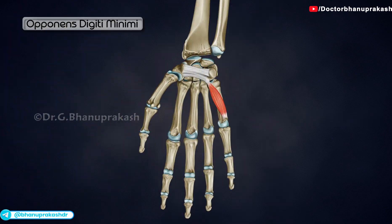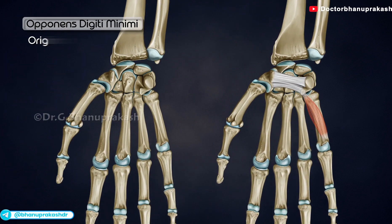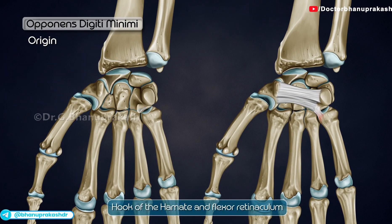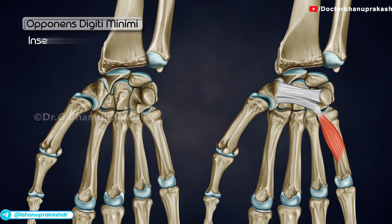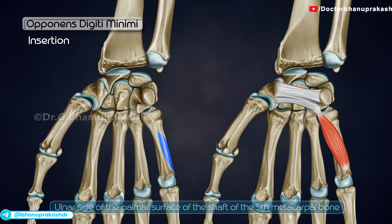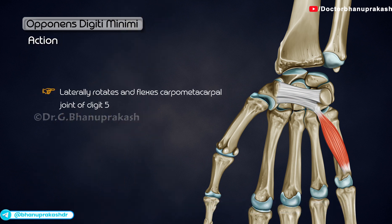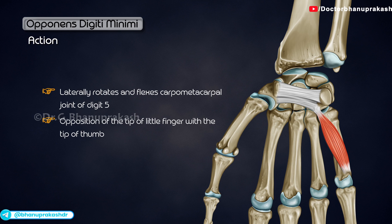Opponens digiti minimi originates at the hook of the hamate and flexor retinaculum. It is inserted on the ulnar side of the palmar surface of the shaft of the fifth metacarpal bone. It laterally rotates and flexes the carpometacarpal joint of digit 5,